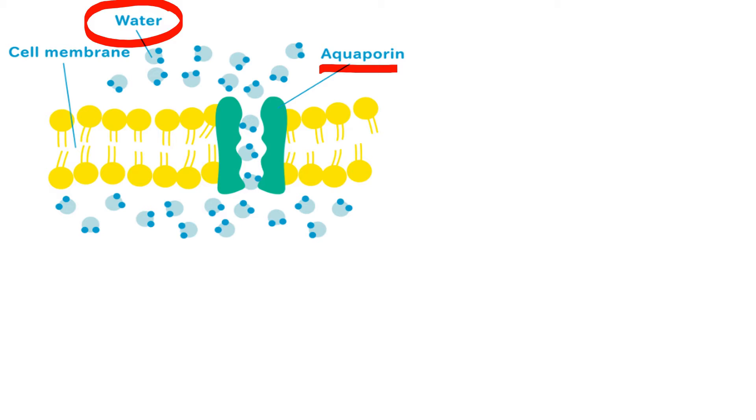Aquaporins are composed of a bundle of six transmembrane alpha-helices that are embedded in the cell membrane.